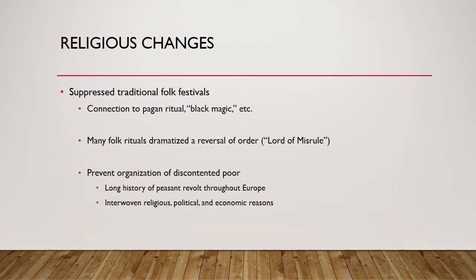In England, there was a suppression of the traditional folk festivals like May Day and harvest festivals, because they reached back to a pre-Christian past. Within the minds of the Protestant authorities, there was a connection to pagan rituals, black magic, and the worship of false gods. On a social level, these folk rituals often dramatized a reversal of order: they featured a lord of misrule who took over, the high were cast down temporarily, and the low were made prominent during these festivals — and that was troubling to authorities for its potential for political upheaval.